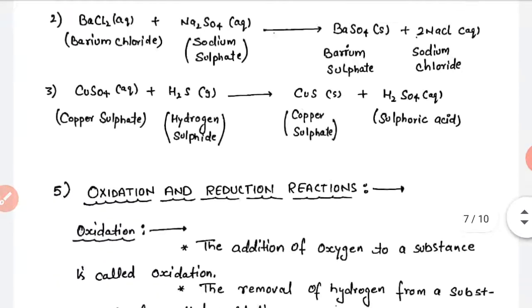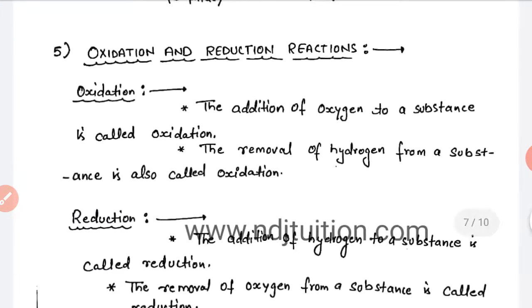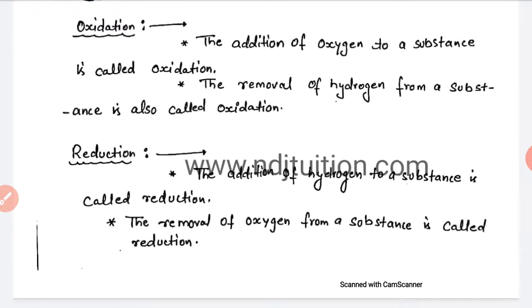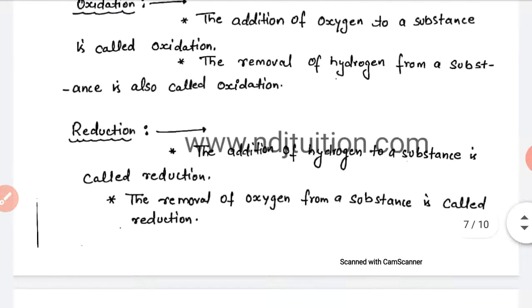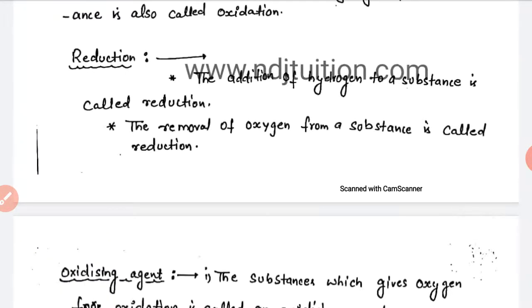Let's move to oxidation and reduction reactions. Oxidation can occur in two ways: first is addition of oxygen, or second is removal of hydrogen — both are called oxidation. So oxidation is the process in which addition of oxygen takes place or removal of hydrogen takes place. Reduction is the opposite of oxidation: addition of hydrogen or removal of oxygen from a substance is called reduction.